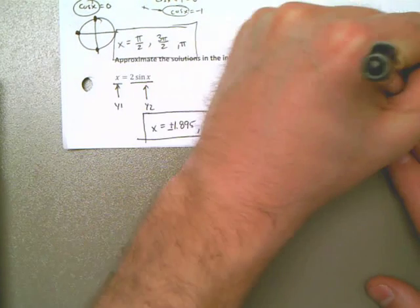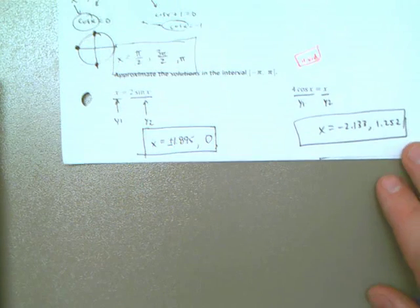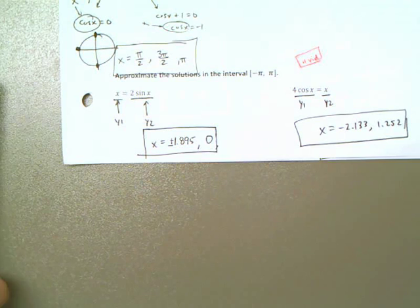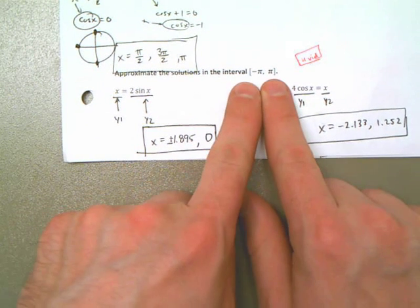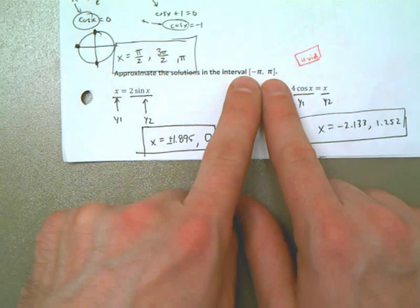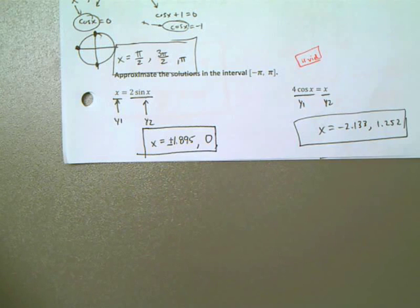So approximate is pretty nice because these problems go fairly quickly. We're just giving a decimal answer instead of something in terms of pi. And we're only worried about the interval between, answers between negative pi to pi. So that tells us our window, what we need to do for the x values. That helps.